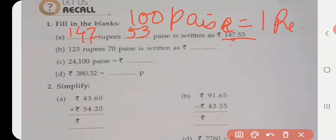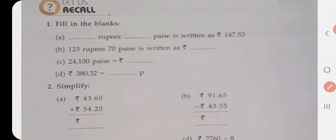Then in the second sum, 123 rupees 70 paisa is written as ₹123.70. So this is how we write when we talk about rupees.